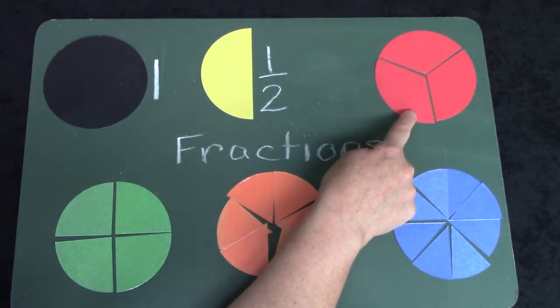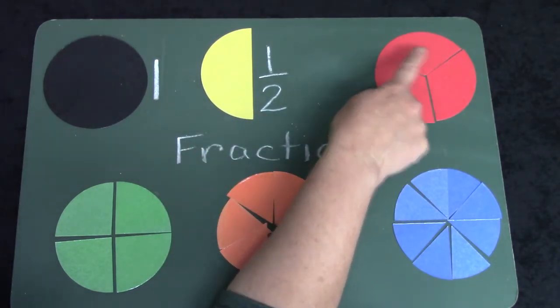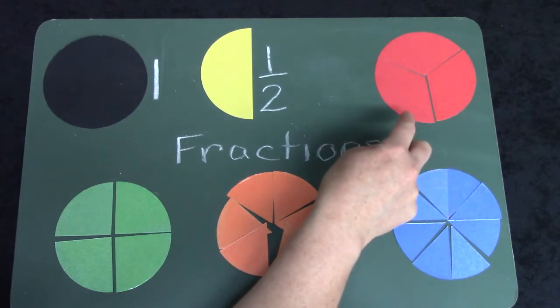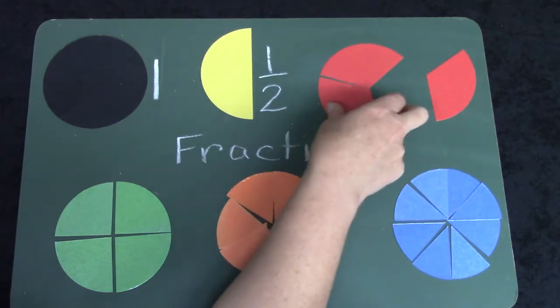What about this circle over here? There's one, two, three pieces that I would need to make a whole circle.